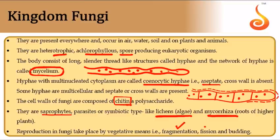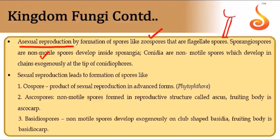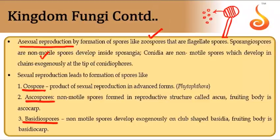Fungal reproduction: vegetative reproduction by fragmentation, fission in yeast, and budding in yeast. Asexual reproduction involves flagellated zoospores or non-motile spores from sporangia. Sexual reproduction produces oospores, ascospores, and basidiospores as haploid sexual spores.